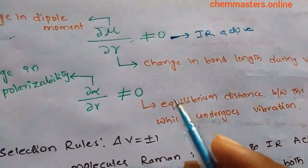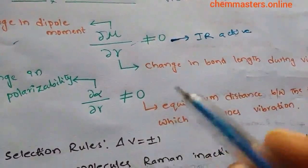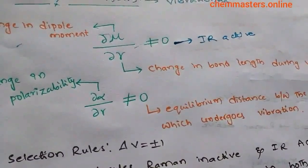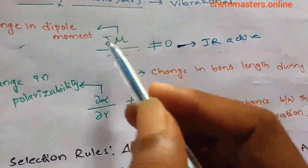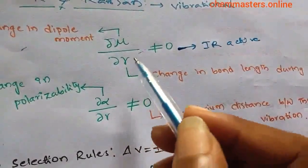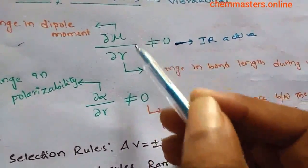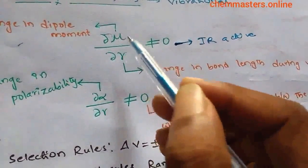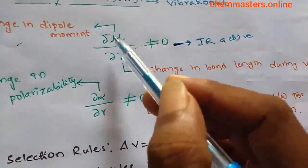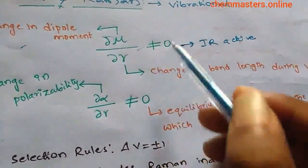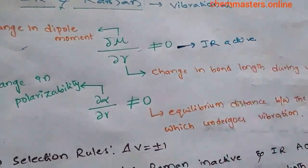Whenever ∂μ/∂r ≠ 0, that vibration is IR active in the particular molecule. If the change in dipole moment and the change in r are such that ∂μ/∂r = 0, that is IR inactive.